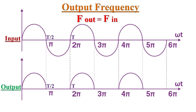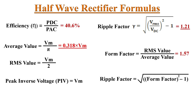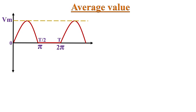The output pulsating DC frequency of a half-wave rectifier is equal to the input frequency: f_out equals f_in. For example, if the input frequency is 100 Hz, then the frequency of the output pulsating DC will also be 100 Hz. Now let's derive the various performance-related formulas for a half-wave rectifier.